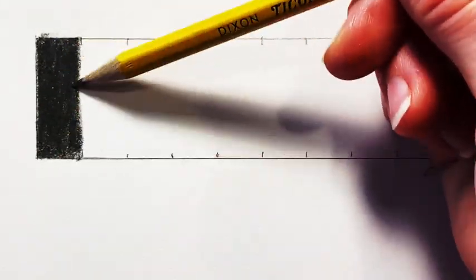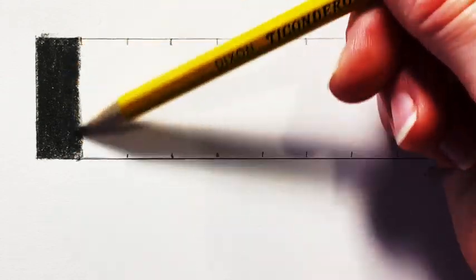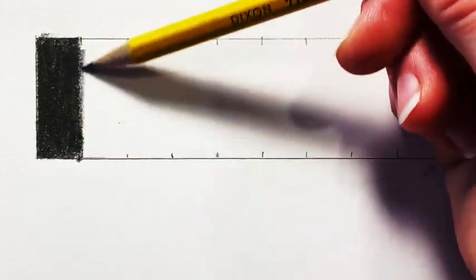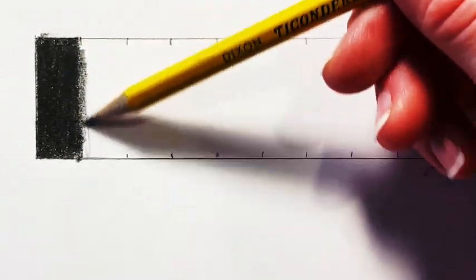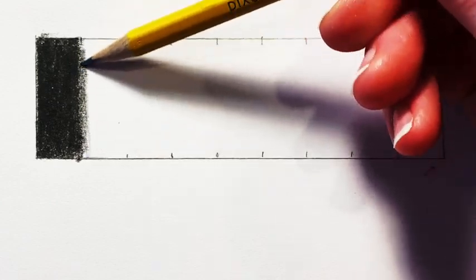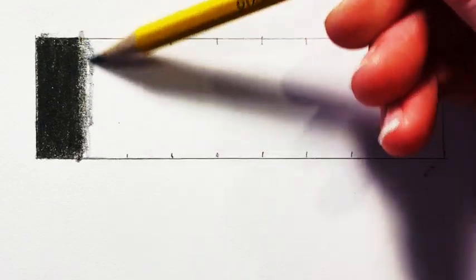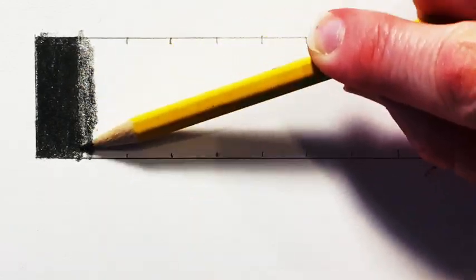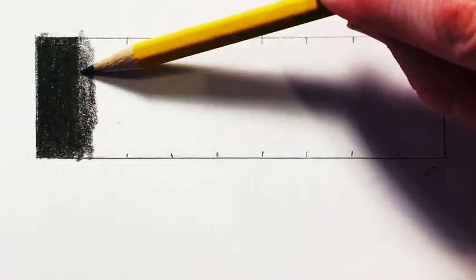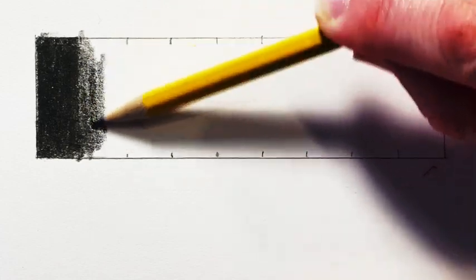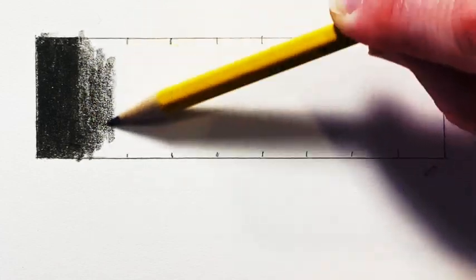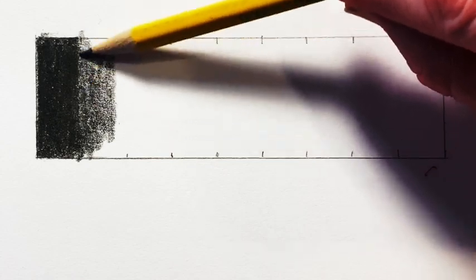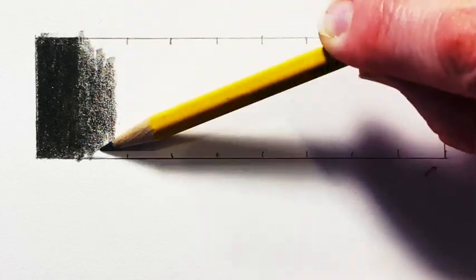Now that I've filled in the first section completely as dark as I can get, then the next section I'm going to just lift up a little bit on my pressure. And as I'm going down, I just continue to have less and less pressure. But make sure in each section you are applying the same amount of pressure so that you have an even value tone.